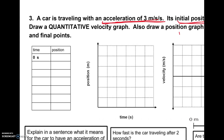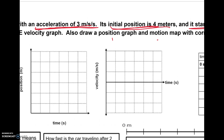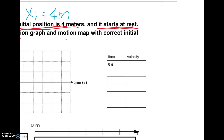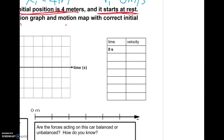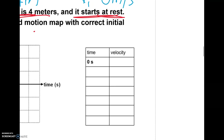We have an initial position of four meters. Our acceleration is three meters per second squared, meaning it's changing three meters per second for every second. Our initial velocity is equal to zero meters per second. Since we're on the velocity-time graph, let's go ahead and fill that in — our initial velocity is at zero meters per second.